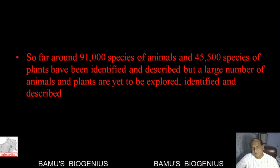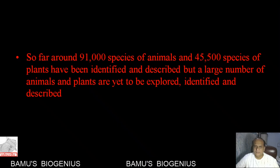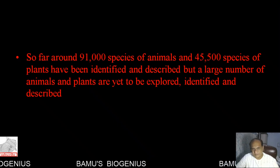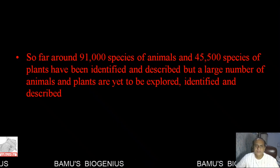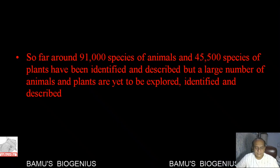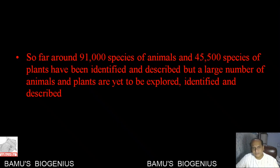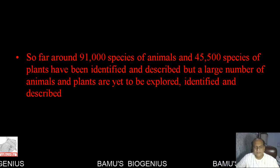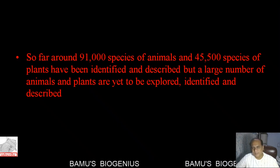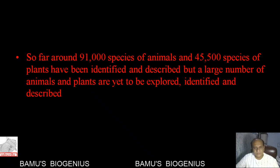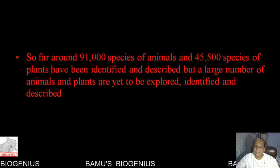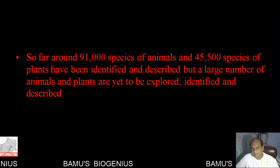The most disturbing situation today is that out of 7 million species, only 91,000 species of animals and 45,500 species of plants have been properly identified and documented. A large chunk of these animals and plants have not been classified or identified, and we do not know their benefit to humans. Before the extinction of these plants, we should know the importance of each and every plant and animal residing on Earth.